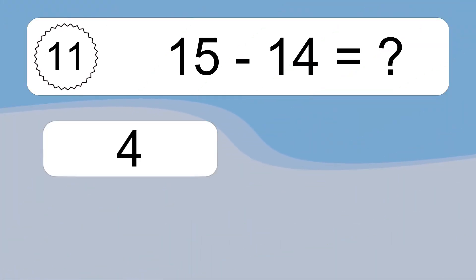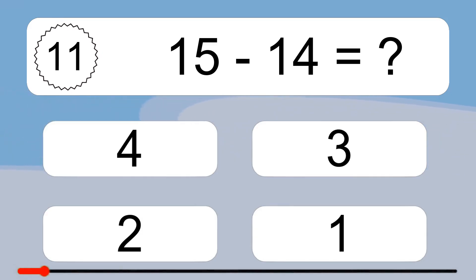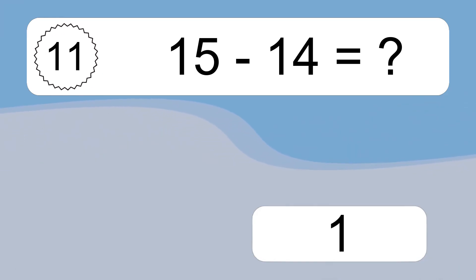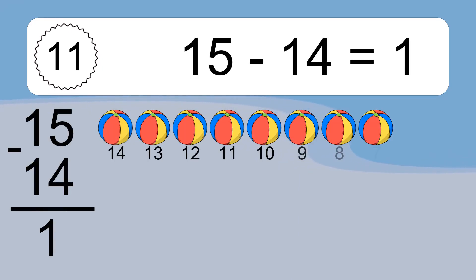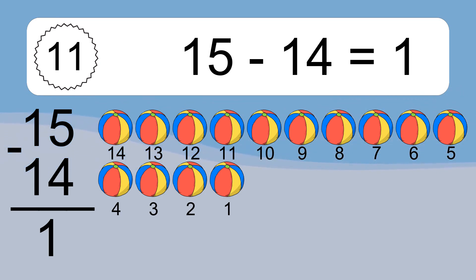15 minus 14 equals what? 15 minus 14 equals 1. Let's count it: 14, 13, 12, 11, 10, 9, 8, 7, 6, 5, 4, 3, 2, 1.